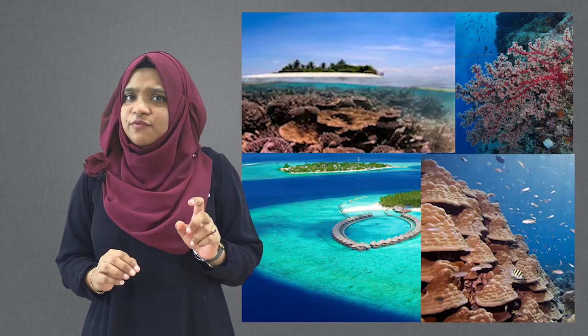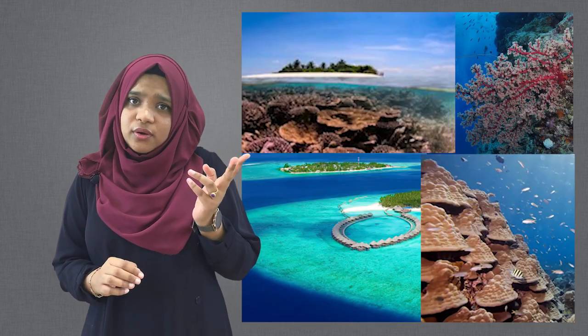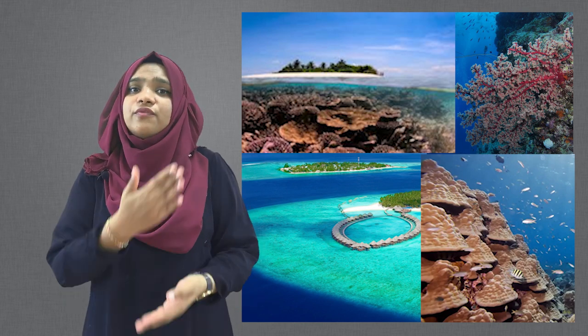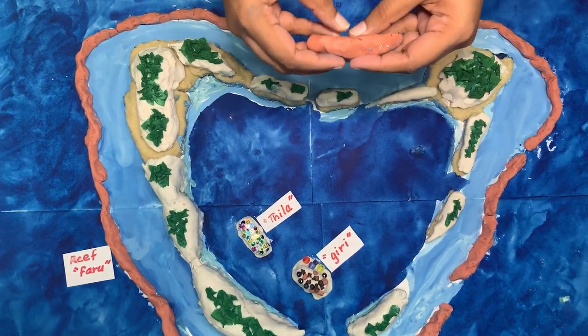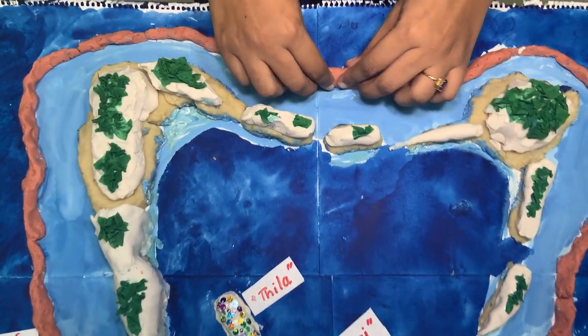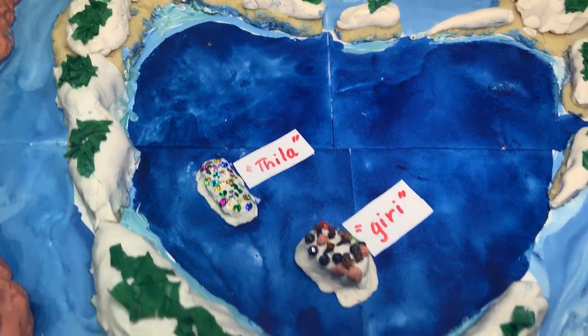Your task is to make a map of your atoll, identifying the important natural features that we discussed. Remember to include map keys and use appropriate colors for your map. If you have any questions, ask your teachers, and Google Earth will also be very helpful. If you want, you can also make a model of your atoll, like how I have made a model of my atoll.